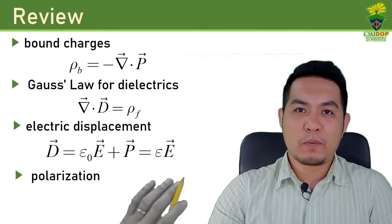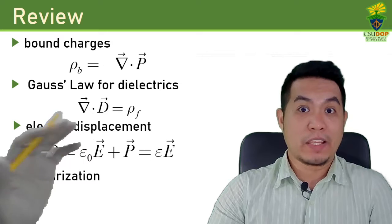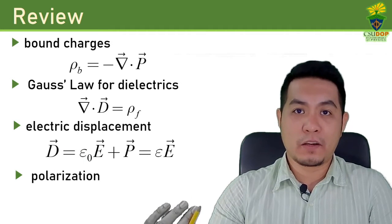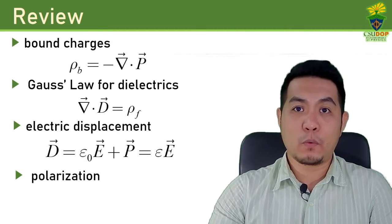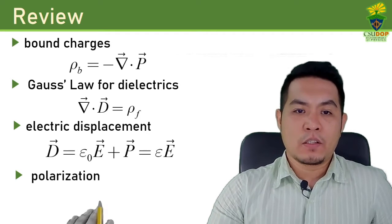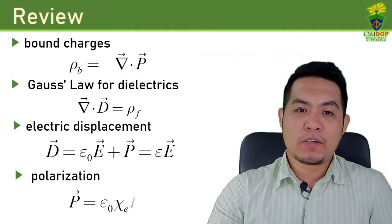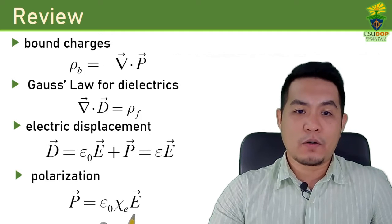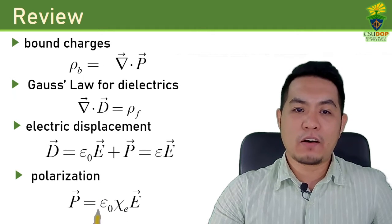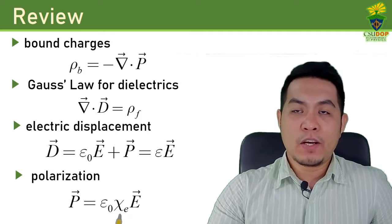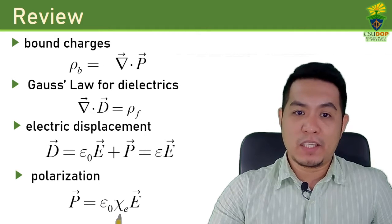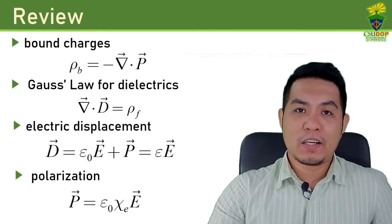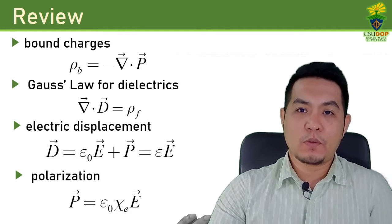The permittivity is the property of a material to permit or allow the electric field to flow within it. We also discussed polarization and how it is related to the total electric field inside a polarized object — they are related by the susceptibility of the material. The higher the susceptibility of the material, the easier it is to polarize.